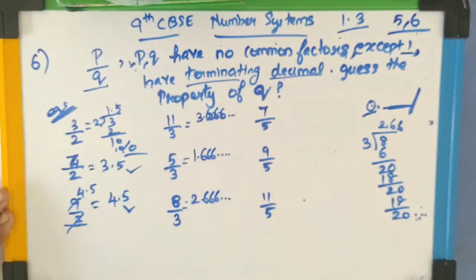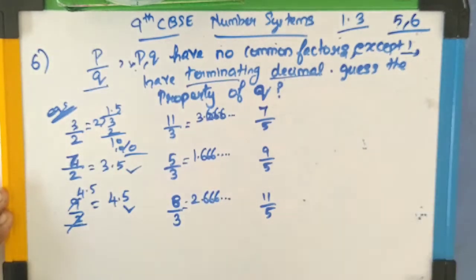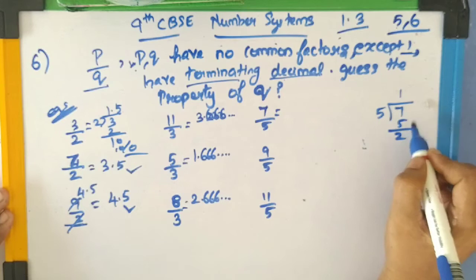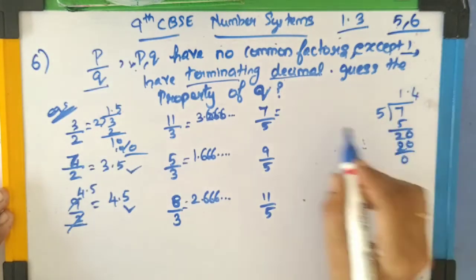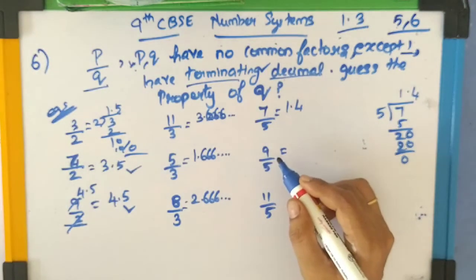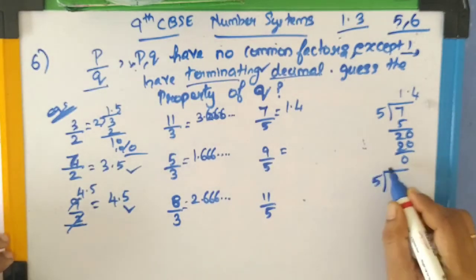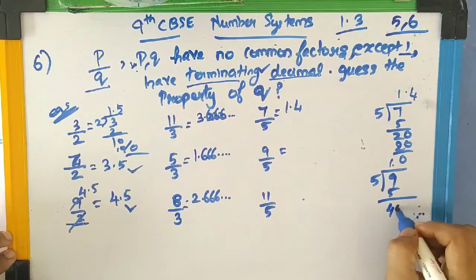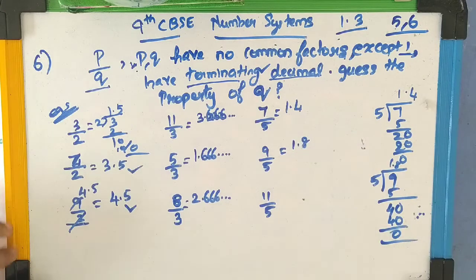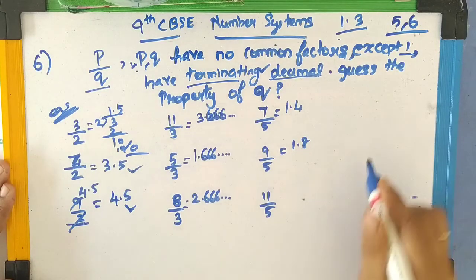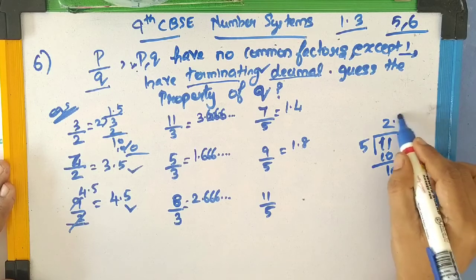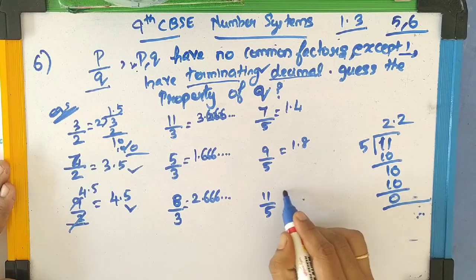Now the next case with denominator 5: when 7 is divided by 5, I get 1.4, leaving remainder 0 — so it is a terminating decimal. When 9 is divided by 5, I get 1.8, leaving remainder 0 — also a terminating decimal. When 11 is divided by 5 by long division, I get 2.2, leaving remainder 0 — so it is a terminating decimal.